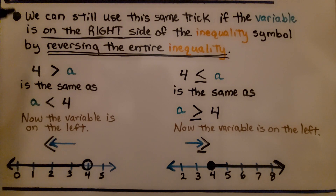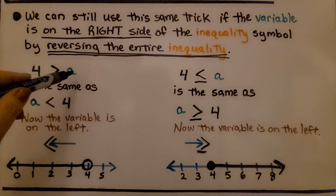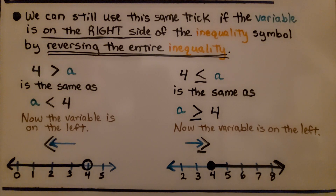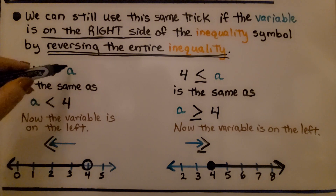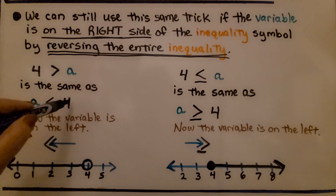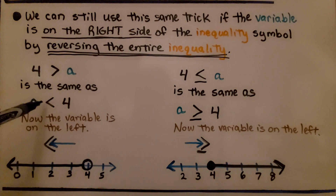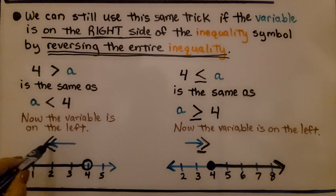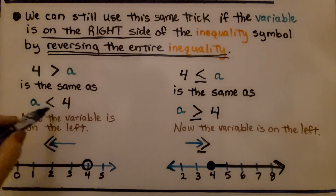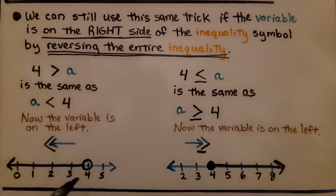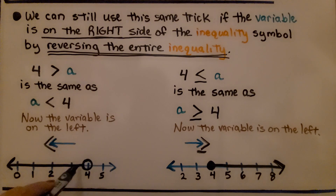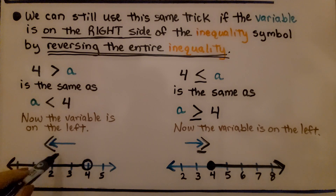We can still use the same trick if the variable is on the right side by reversing the entire inequality. If we have 4 is greater than A, we put 4 on the right, A on the left, and reverse the inequality symbol direction. So 4 is greater than A becomes A is less than 4. Now the variable is on the left — the arrow points left, and since there's no 'or equal to,' we use an open circle.